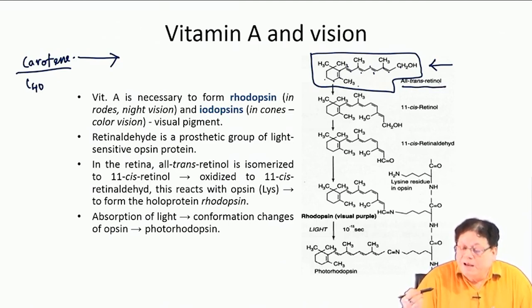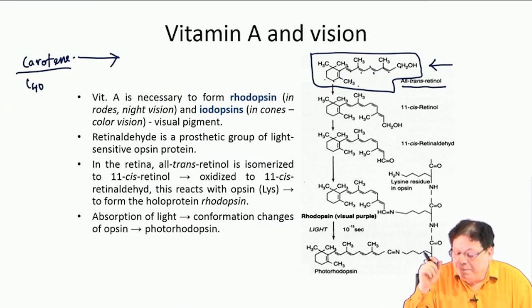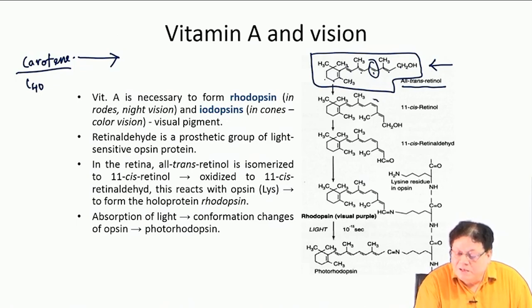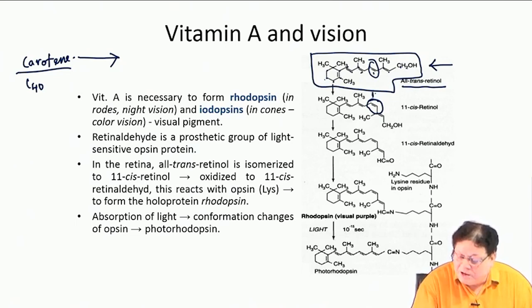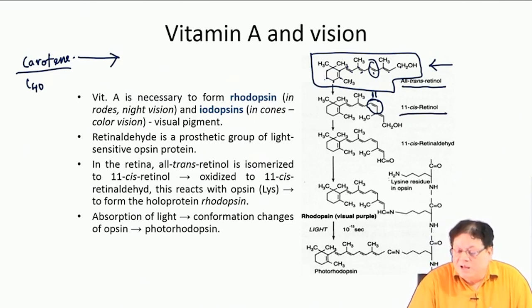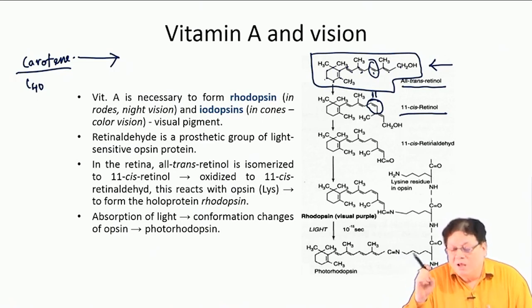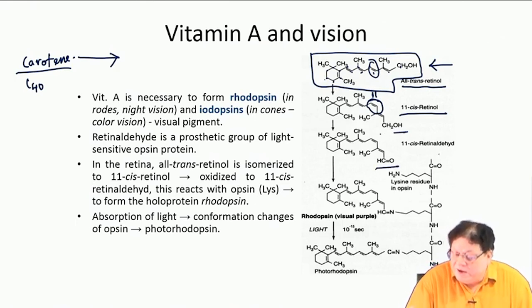All-trans retinol is converted by an enzyme called retinol isomerase. The double bond — numbered at position 11 — is now in the cis form, giving 11-cis retinol. This 11-cis retinol is then oxidized by retinol dehydrogenase, a redox enzyme, which oxidizes the CH2OH to CHO, producing 11-cis retinal.